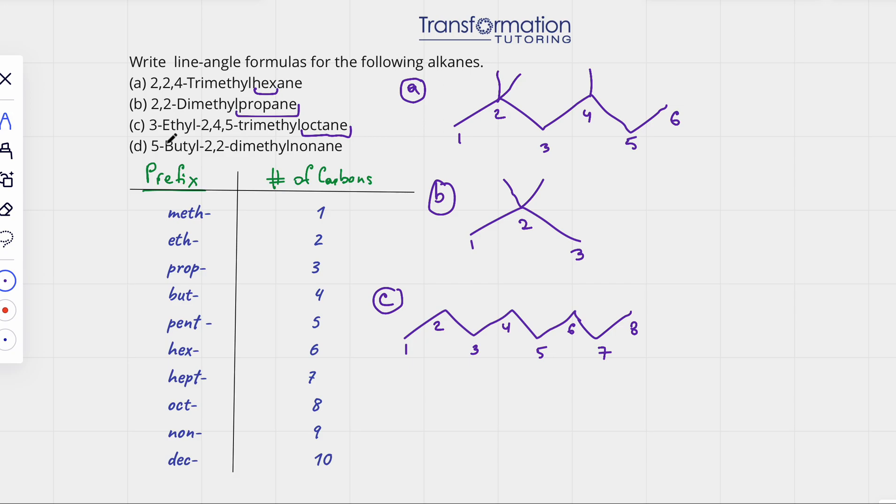Next, let's get to this name. 3-ethyl. What does it mean? It means on carbon number 3, there is an ethyl group. What's an ethyl? Eth means two carbons. So two carbons are coming off of carbon number 3: 1, 2. This is an ethyl group. So we're done with that.